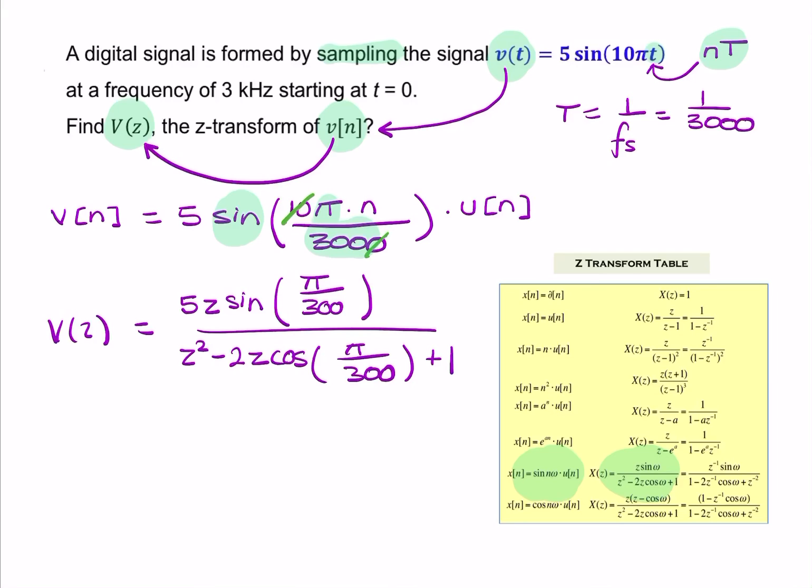So, the question was, find the z-transform, v(z), and there it is. So, that would be our final answer. We did that by first carrying out a sampling process. And that took v(t) and converted it to v(n), and then we took v(n) and converted that to v(z), and we made use of the z-transform table to do so. Thank you.